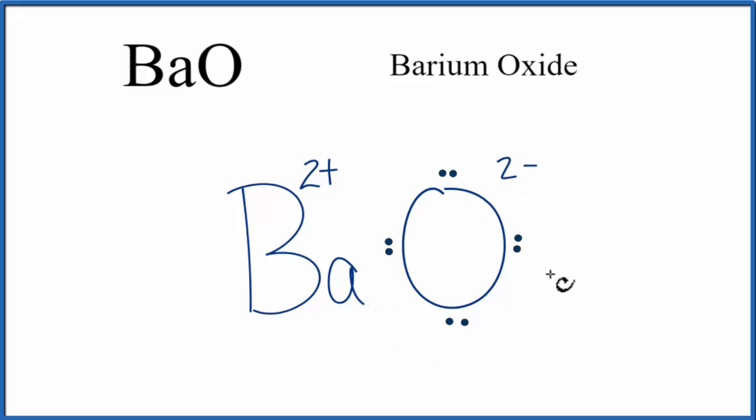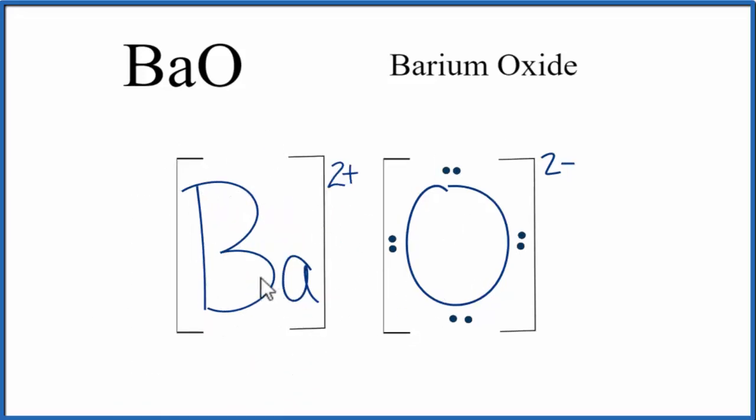We need to put brackets around the oxygen, and you'll often see brackets placed around the metal. We put these brackets here to show that the electrons were transferred from the barium to the oxygen.